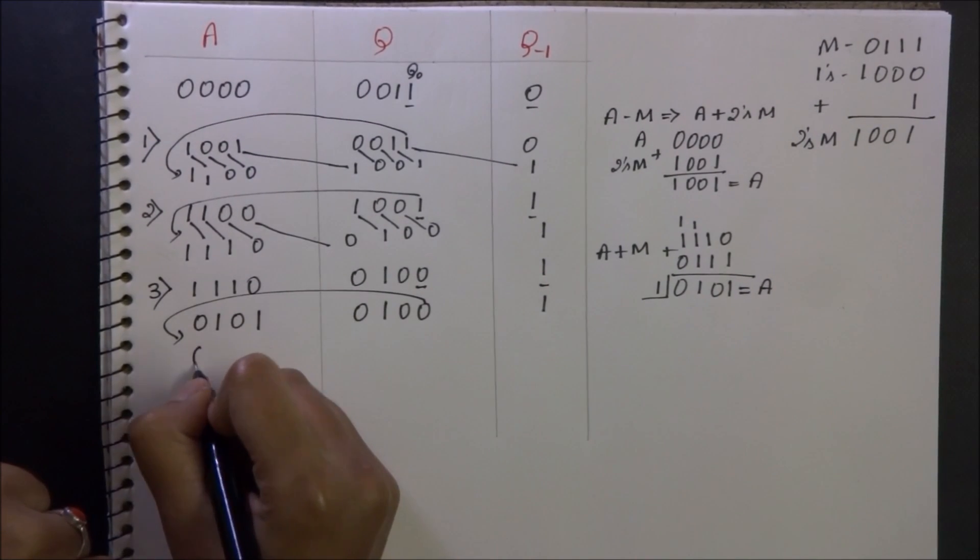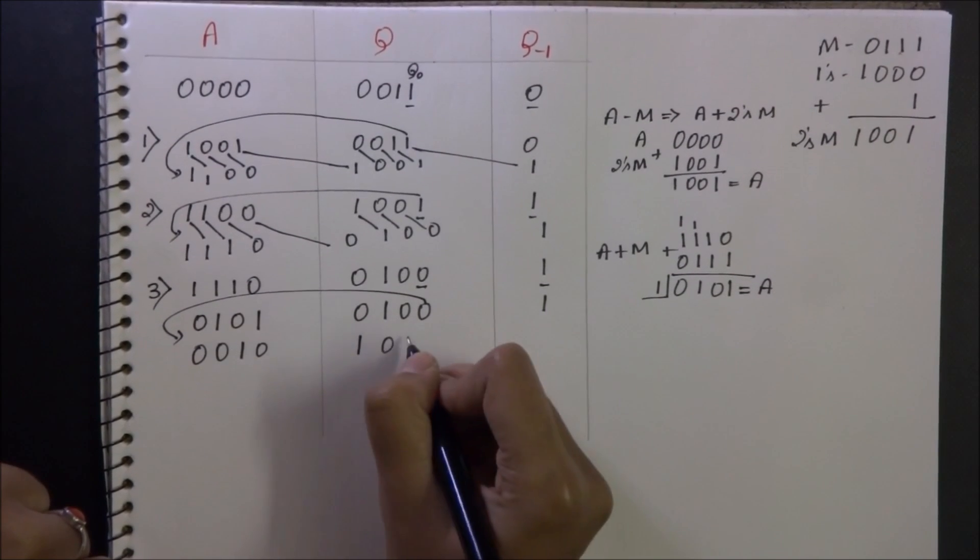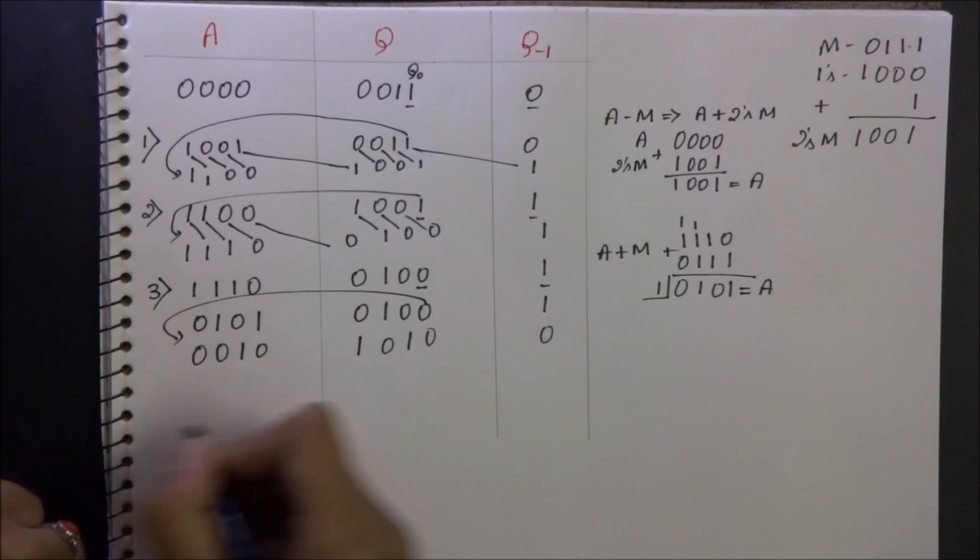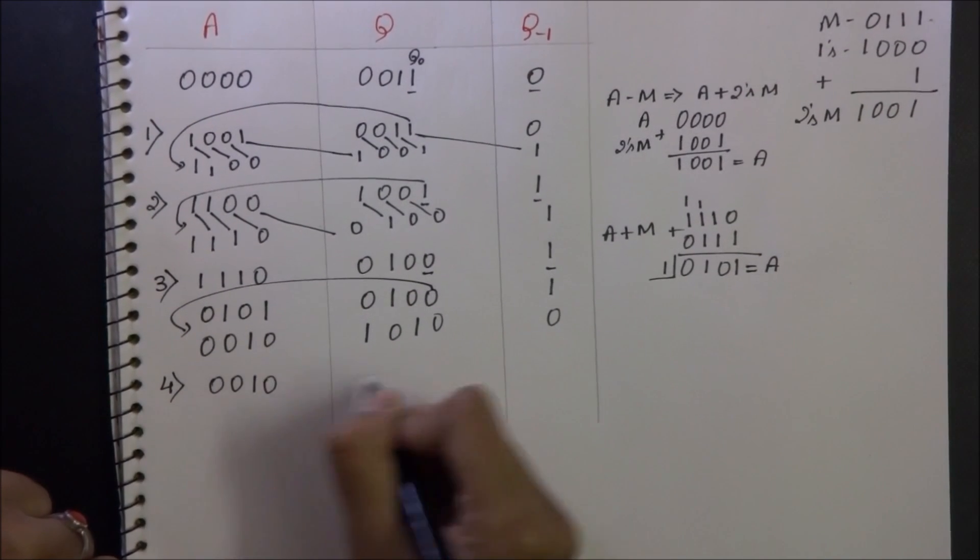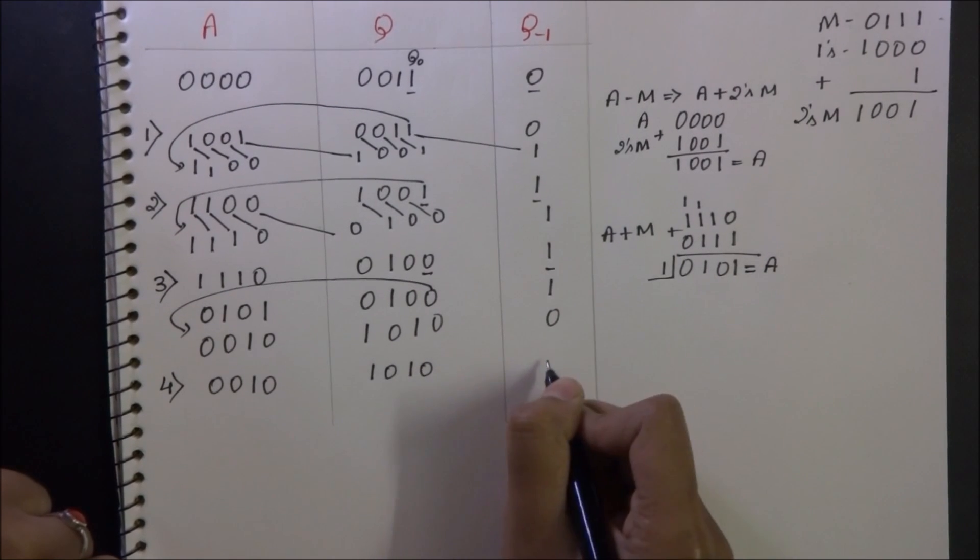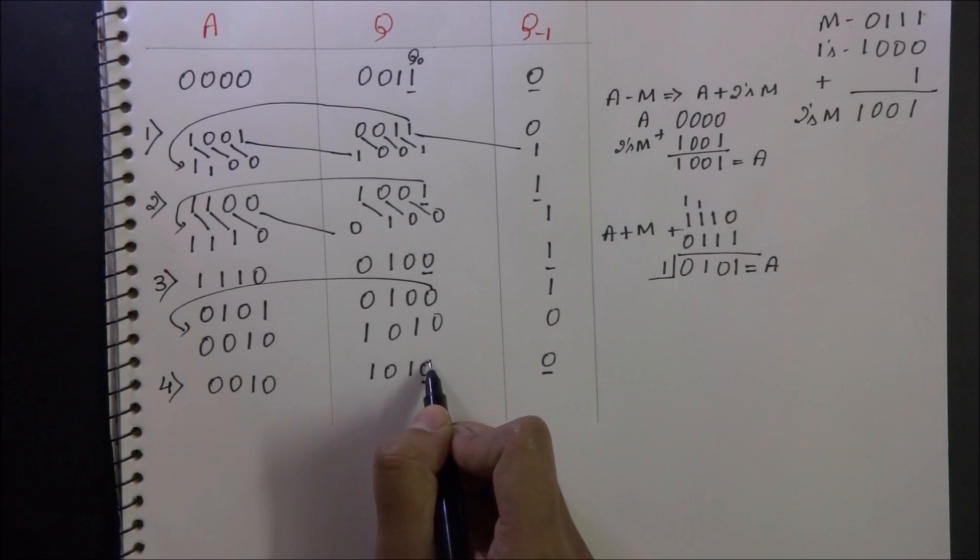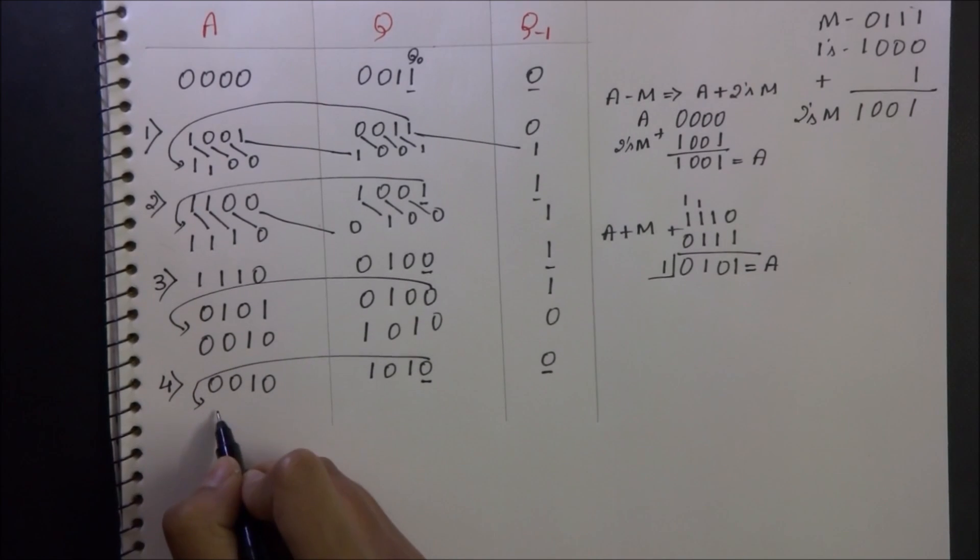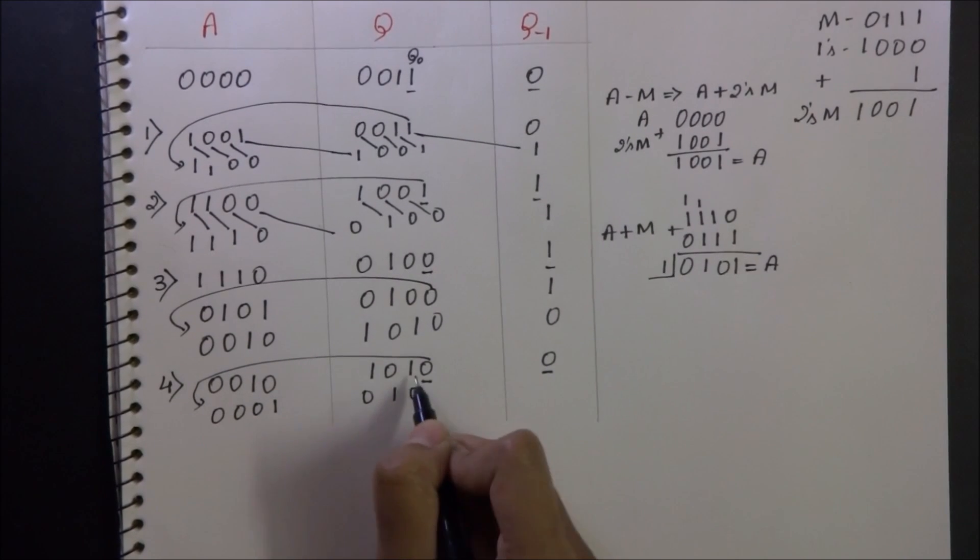Shifting it right, I get 0-0-1-0-1-0-1-0-1-0-0. So for the fourth step the status is 00101010 and 0. 0 and 0 are equal so I need to perform only shift right operation that is 000101010.